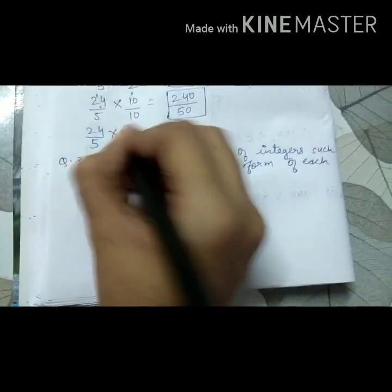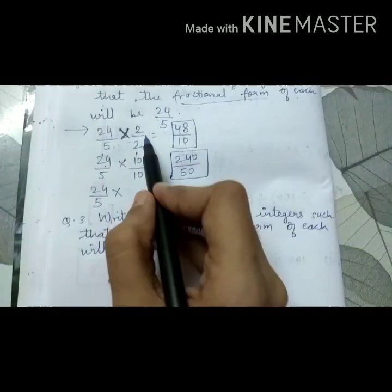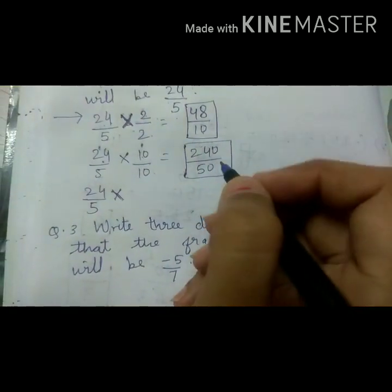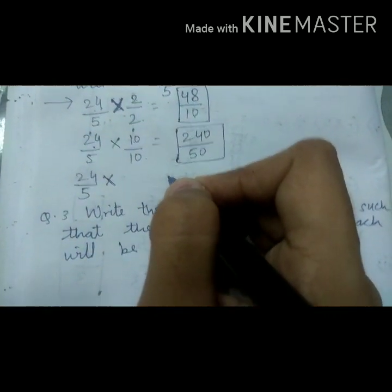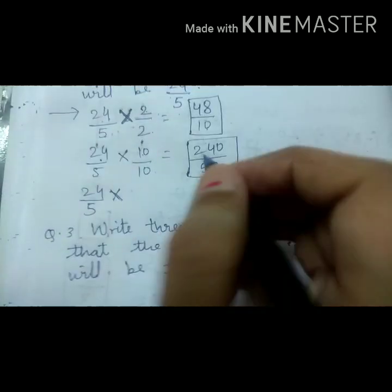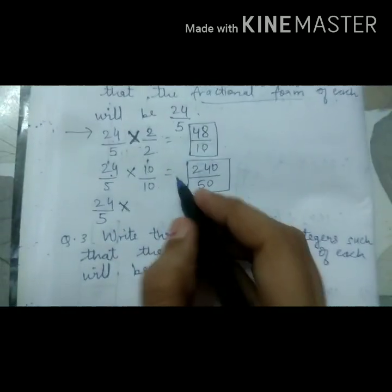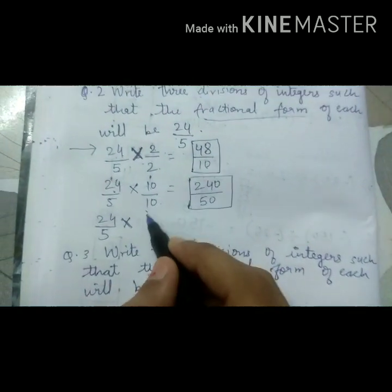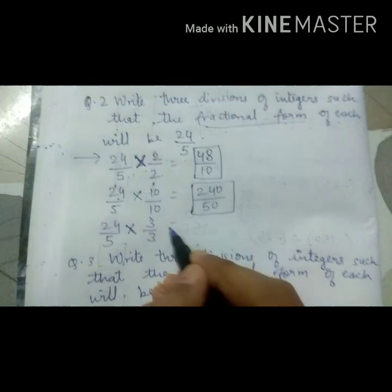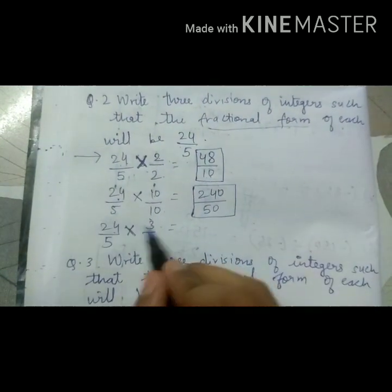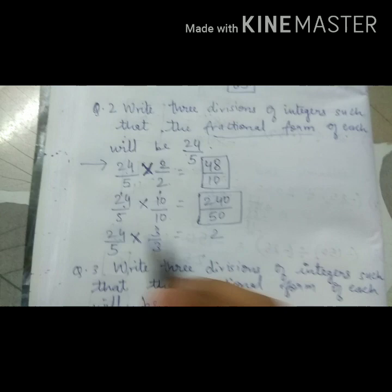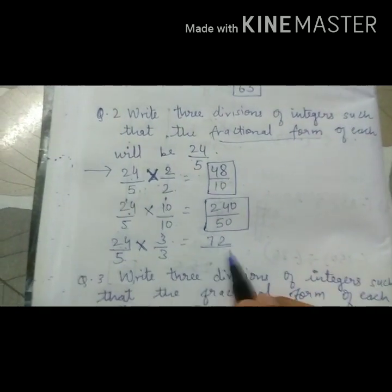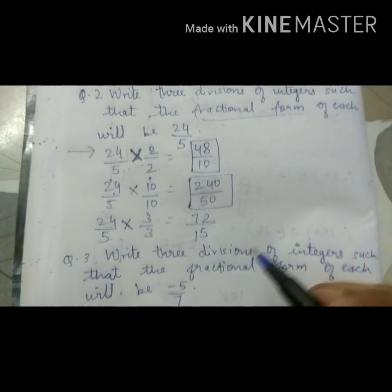Last one, you can take any number. But keep in mind, whatever you are multiplying in numerator, same number has to be divided in the denominator. So I am taking here 3. 24 threes are 72, 5 threes are 15. 72 upon 15.